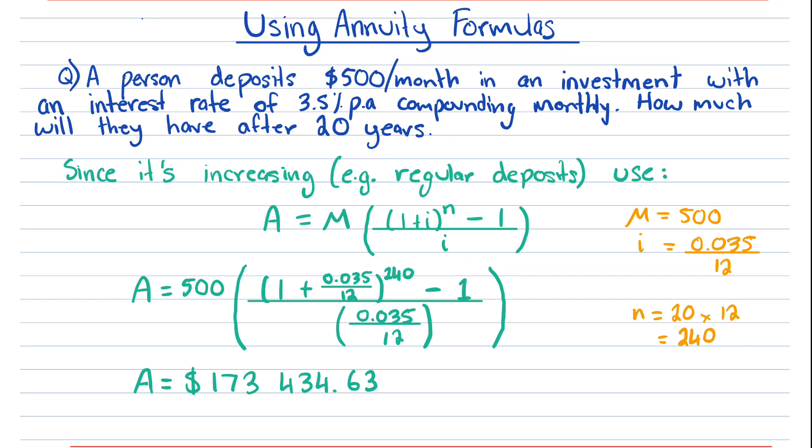To put some context to what this number means: if someone was depositing $500 every month into an account for 20 years with an interest rate of 3.5% per annum compounding monthly, they would have approximately $173,000 at the end of 20 years.